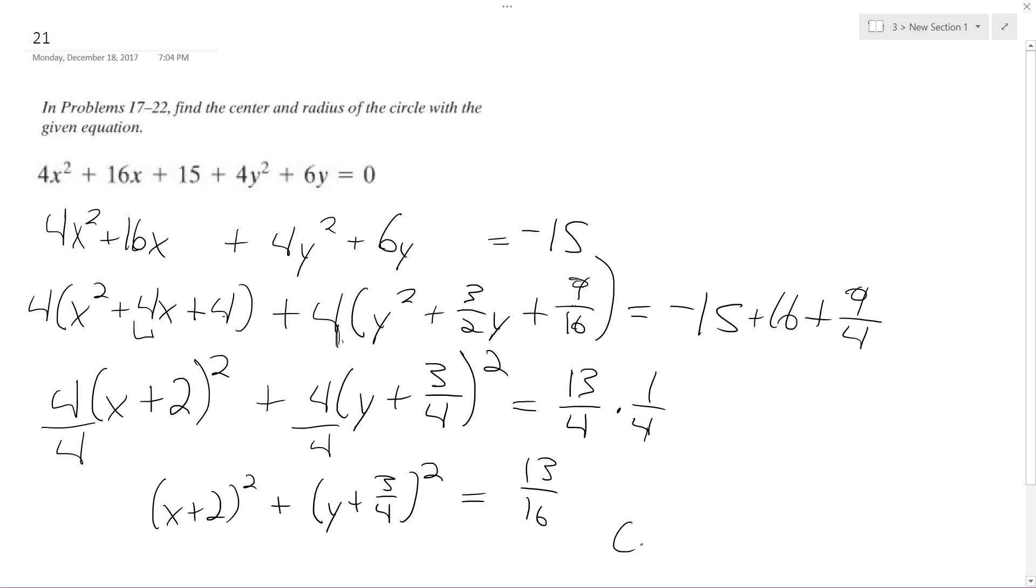So my center finally is going to be at (-2, -3/4), and my radius is going to be square root of this, square root of 13 over 16, which ends up being square root of 13 over 4. And that's it, I hope that helps, thanks for watching.